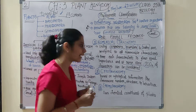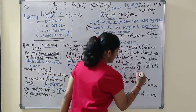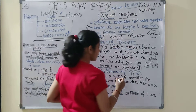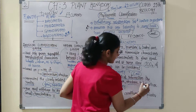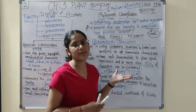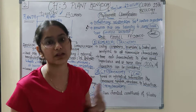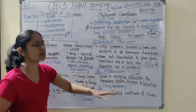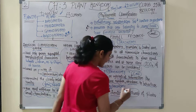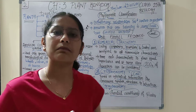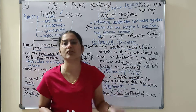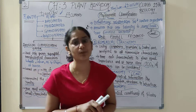Another source is cytotaxonomy. 'Cyto' comes from cytology, meaning something related to the cell. This classification is based on cytological information like chromosome number, structure, and behavior. By studying the cell, you can classify organisms. If we move to chemotaxonomy, 'chemo' comes from chemical — using the chemical constituents of the plant, you can classify the plant. These are the three sources when you do not have fossil evidence: numerical taxonomy, cytotaxonomy, and chemotaxonomy.